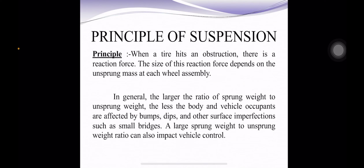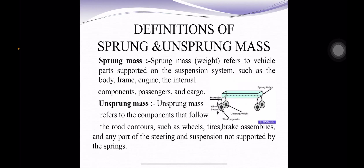The principle of suspension: when a tire hits an obstruction, there is a reaction force. The size of this reaction force depends on the unsprung mass at each wheel assembly. In general, the larger the ratio of sprung weight to unsprung weight, the less the body weight and vehicle occupants are affected by bumps, dips and other surface imperfections such as small bridges. A large sprung weight to unsprung weight ratio can also impact vehicle control.